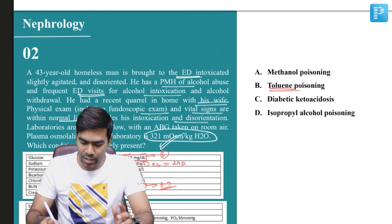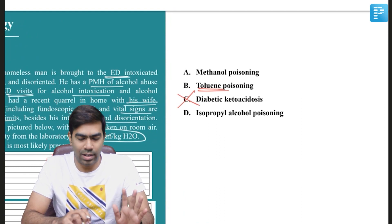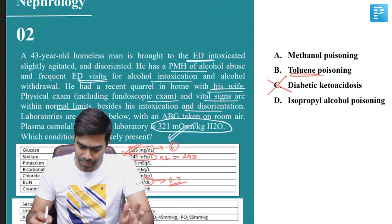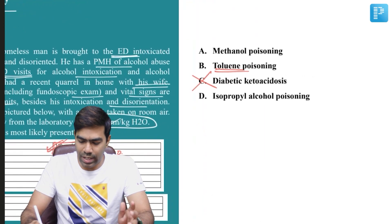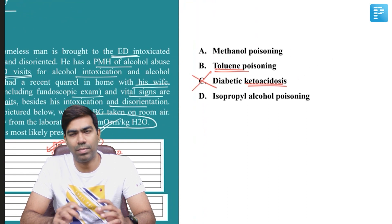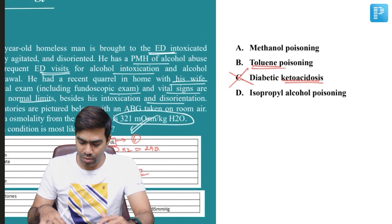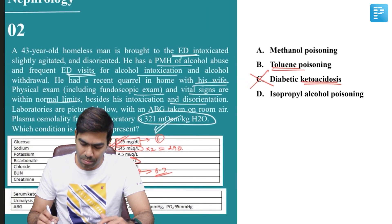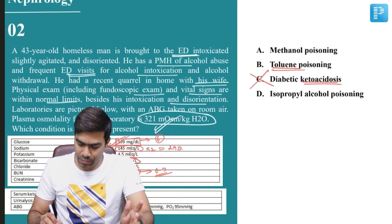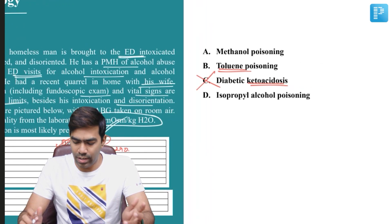It's very unlikely to be diabetic ketoacidosis because the patient has a glucose of only 109. At the same time, look at the bicarbonate — it's 26, so it's extremely unlikely to be DKA. In DKA, the serum bicarbonate will definitely be less than 18, usually less than 15 or even 10. As per the definition of DKA, the pH should also be less than 7.3, but here the pH is 7.4. So there are plenty of reasons why it is not diabetic ketoacidosis.